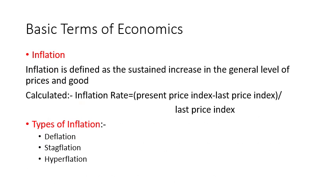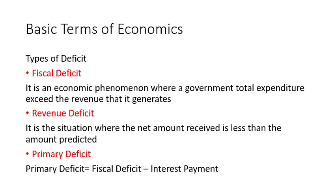Now we will look at inflation and the types of inflation. Inflation is defined as the sustained increase in the general level of prices of goods. Inflation rate equals present price index minus last price index divided by last price index. There are two types of price index used to calculate inflation: wholesale price index and consumer price index. The types of inflation include deflation — when prices go down — then stagflation, and then hyperinflation.